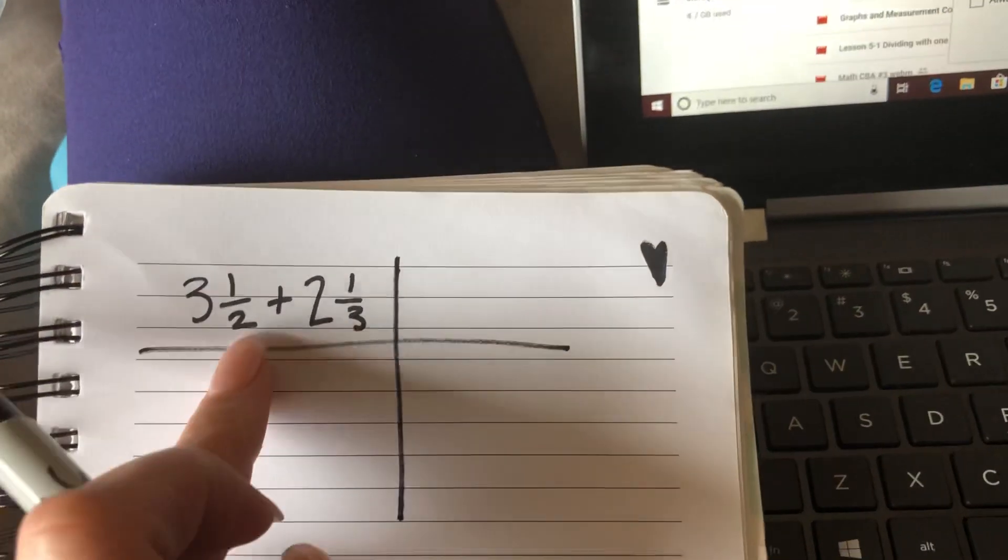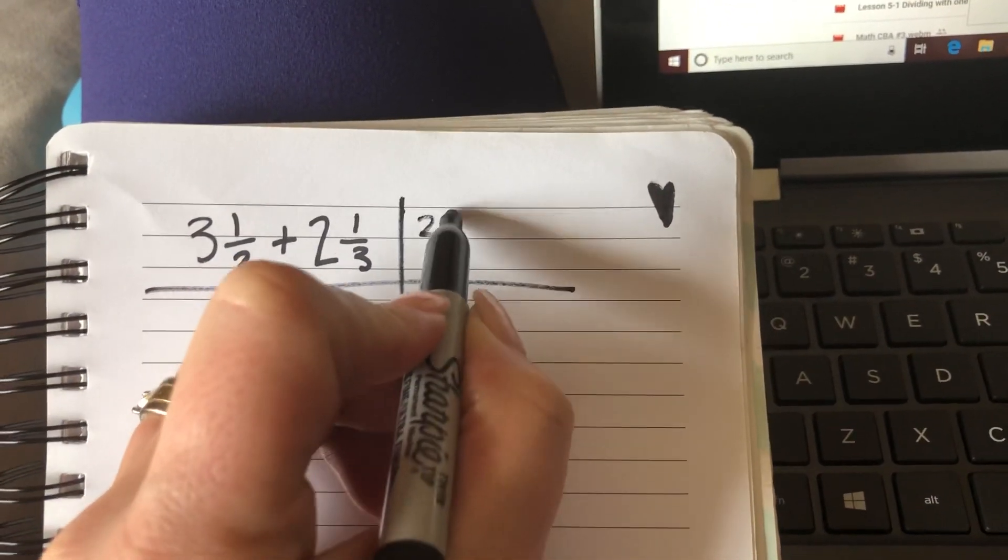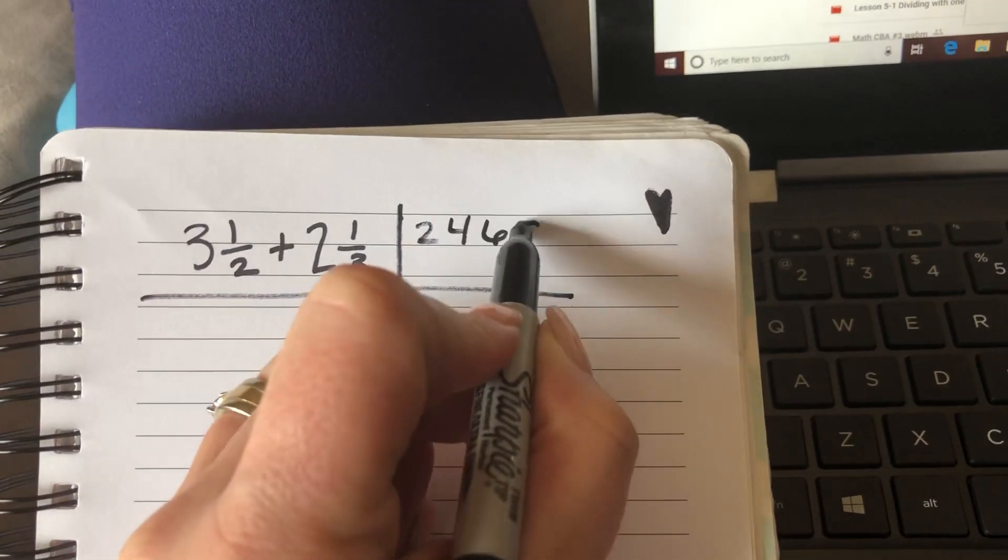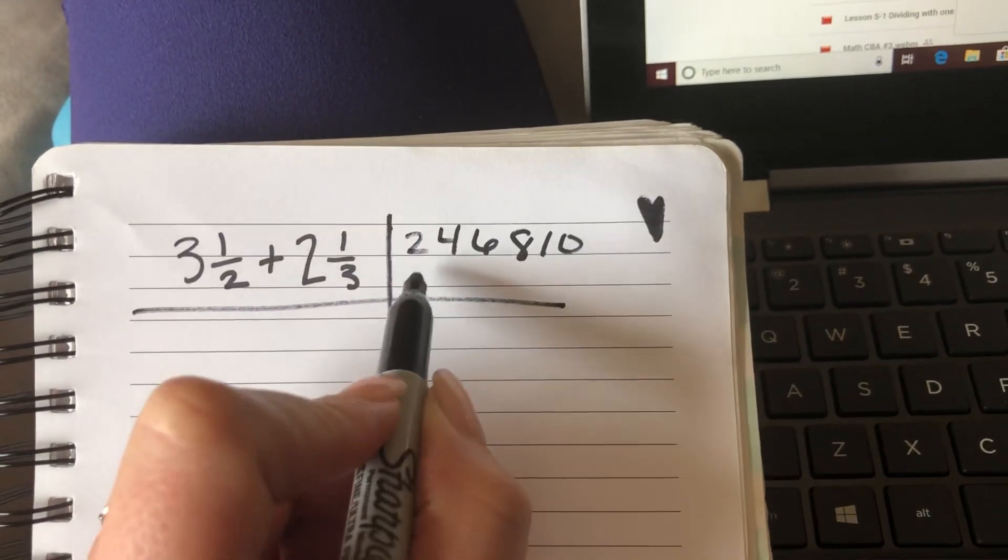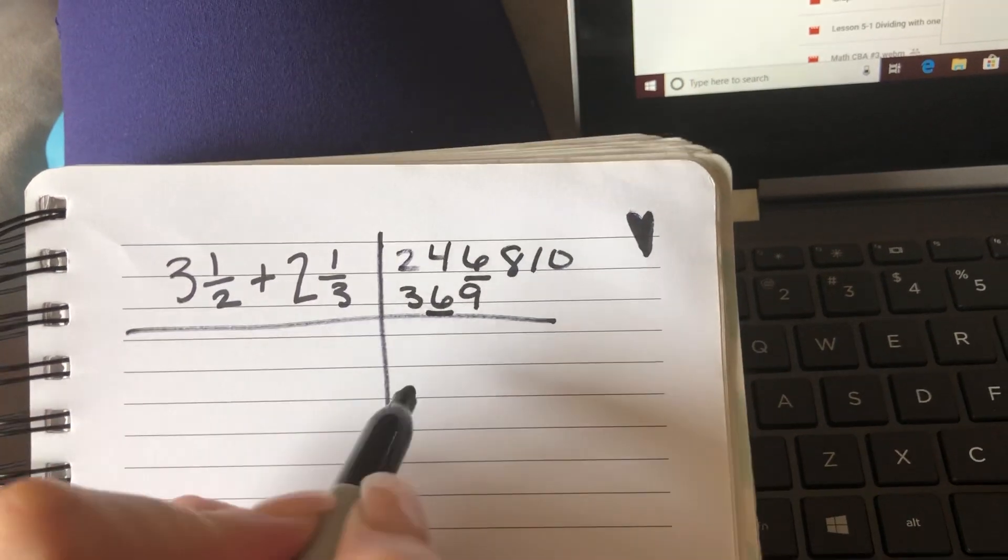If we don't have a common denominator, like halves and thirds, we're going to find a common denominator. Some of you already might have one in mind. If you don't, list your multiples until you find something that they have in common. Remember, you want to find the least common multiple.